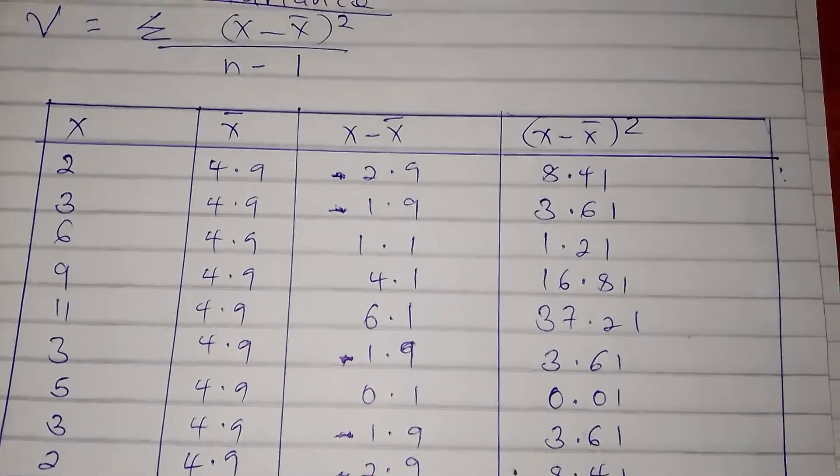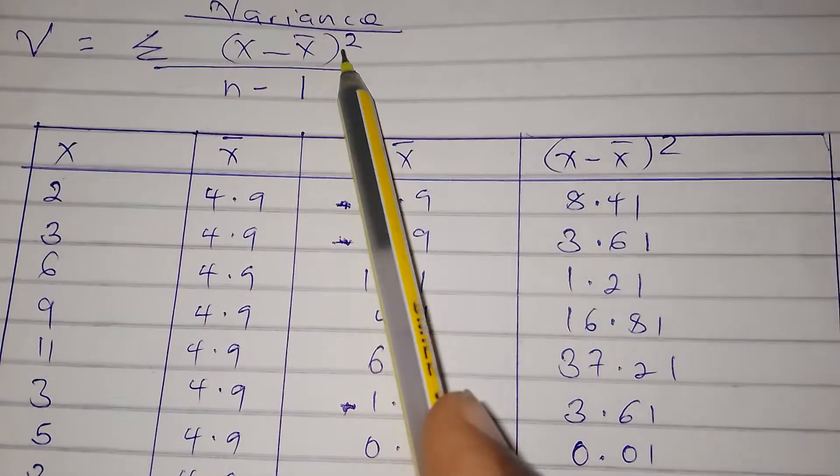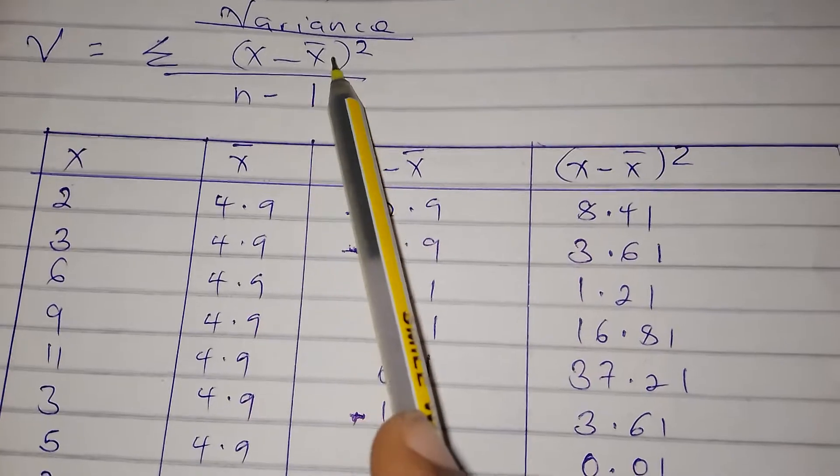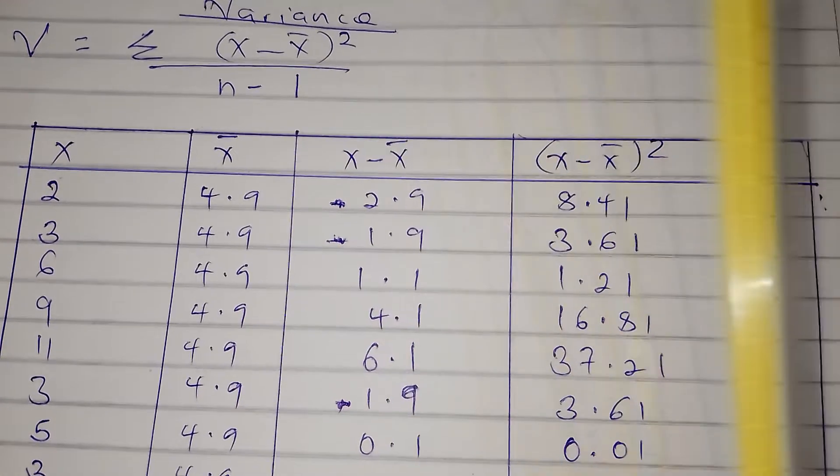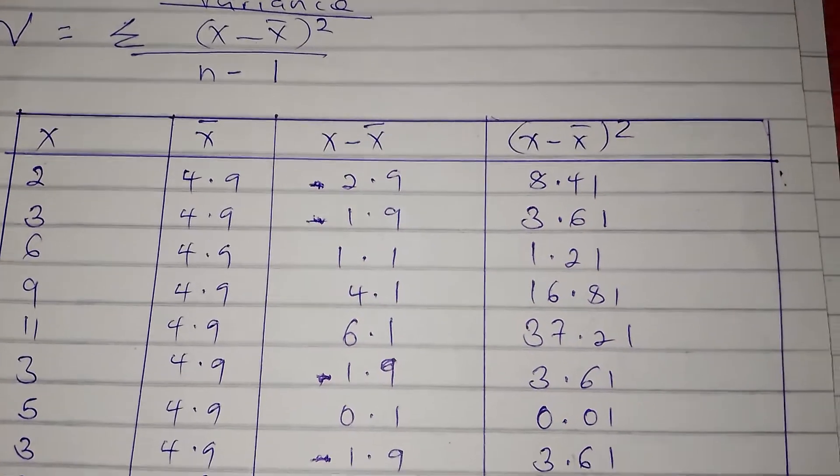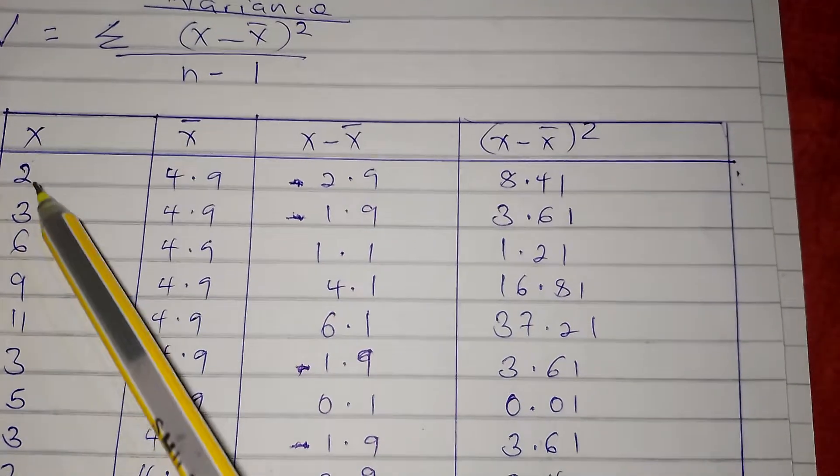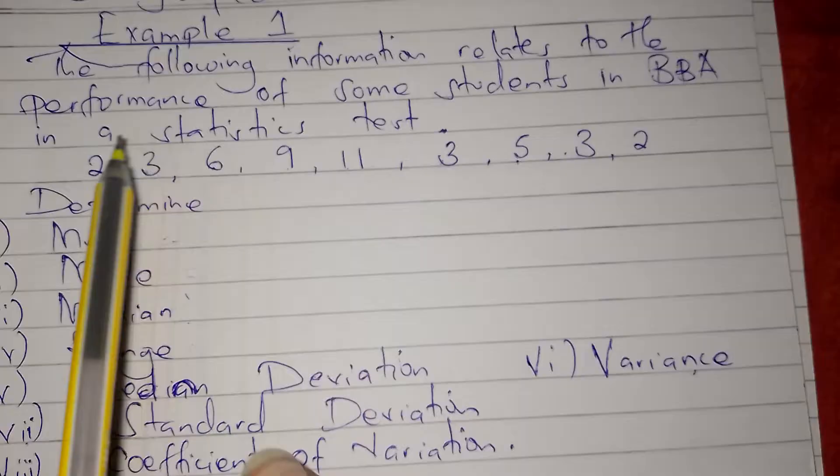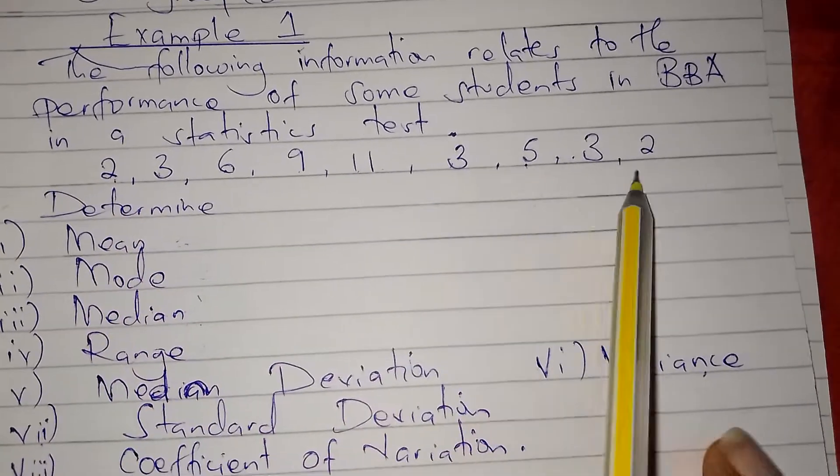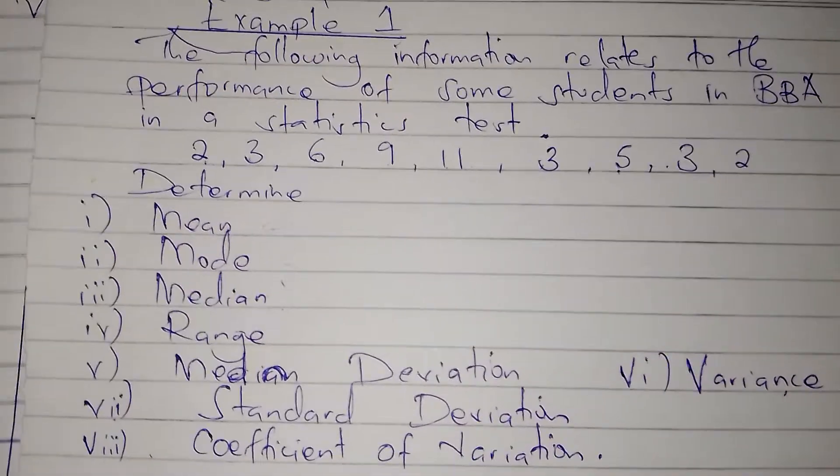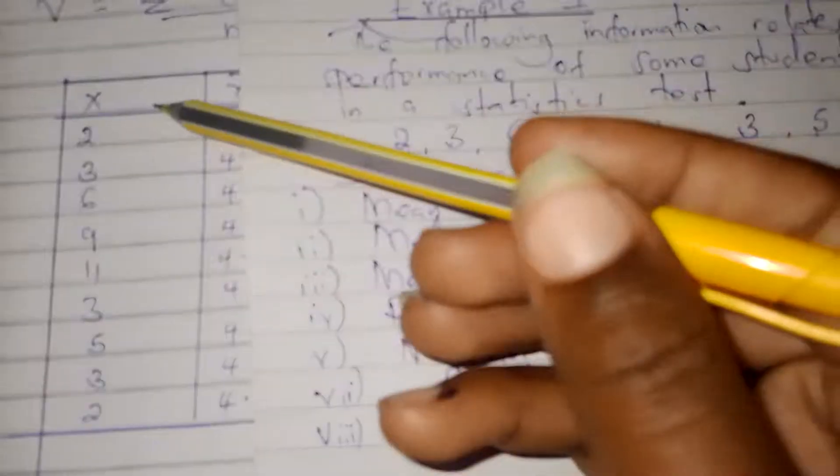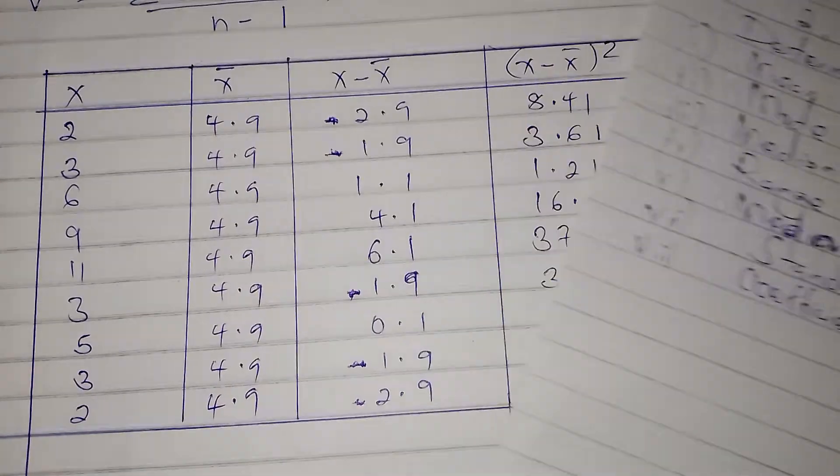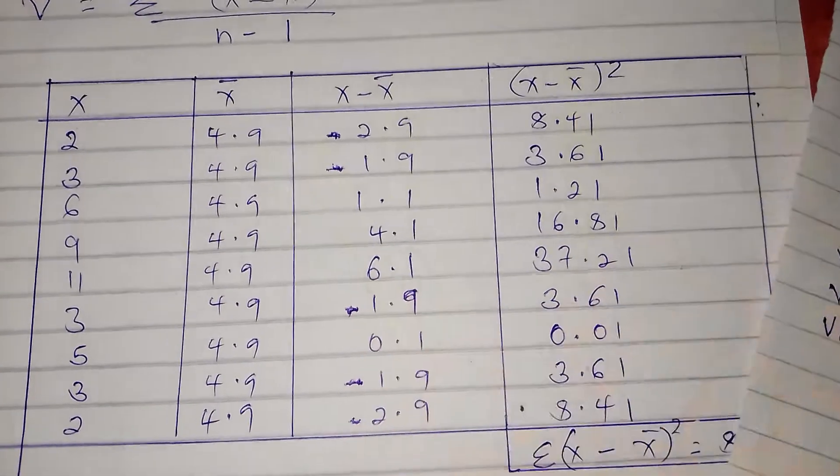When calculating variance, we shall need x, x̄, (x - x̄), and (x - x̄)². The values of x we get from the question, the marks that they gave us. These are the values of x, written as they were given.